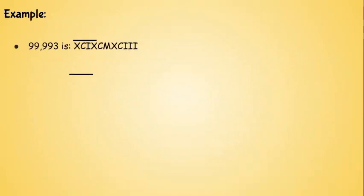Example. 99,993 is XCIX with an overline above them, and CMXCIII without an overline. So we're just gonna break these down. 99,000 is XCIX with a line over it, 900 is CM, 90 is XC, 3 is III.